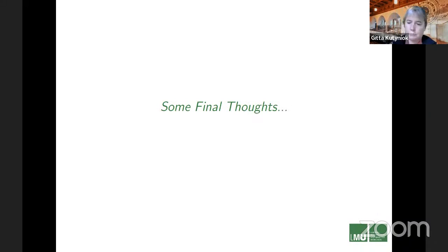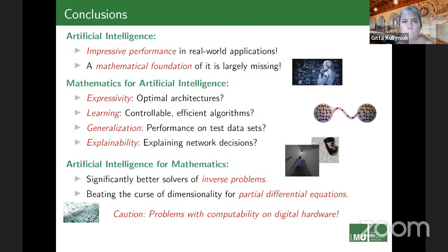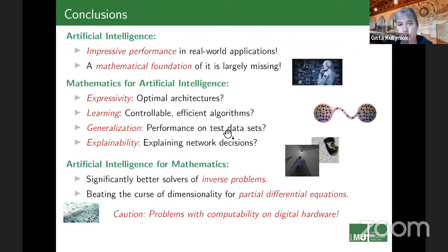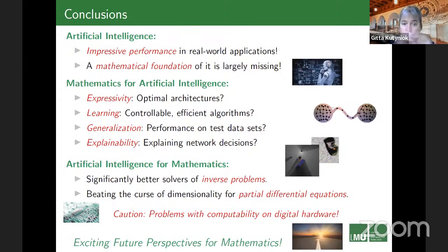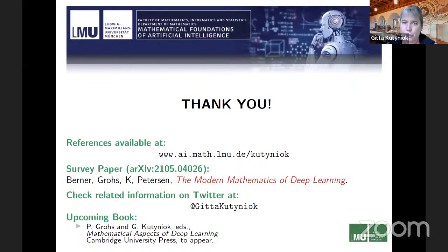Let me finish with some final thoughts. Artificial intelligence shows impressive performance in real-world applications, but a mathematical foundation is to a large extent still missing and in great need. We discussed two directions: mathematics for AI (expressivity, learning, generalization, explainability) and AI for mathematics (inverse problems and partial differential equations). There are also problems with computability on digital hardware. From my perspective, there are really exciting future perspectives for mathematics in this field. Thank you very much for your attention.